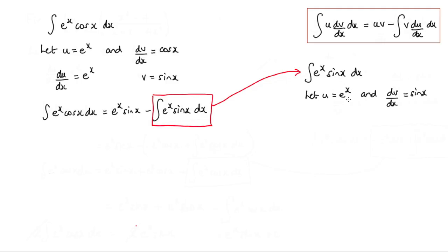We have to differentiate this term here, so du by dx, well that's simply e to the x. And we need to integrate here, so v would be negative cos x.